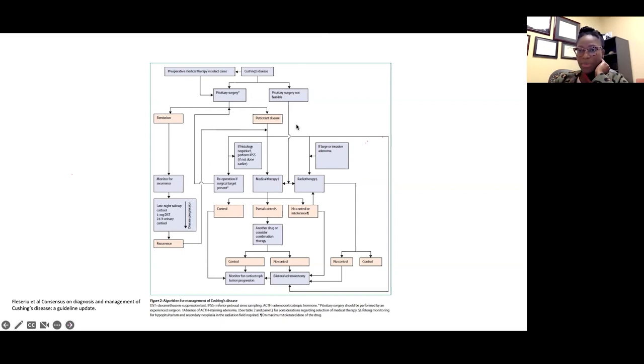For persistent disease or reoperation, if there's a good surgical target, medical therapies are also discussed. Even if there is a target, you still discuss that with them, weighing the risk versus benefit. Radiation is reserved as third-line treatment—meaning either second surgery or medical therapy, and if that fails, they go to radiation.